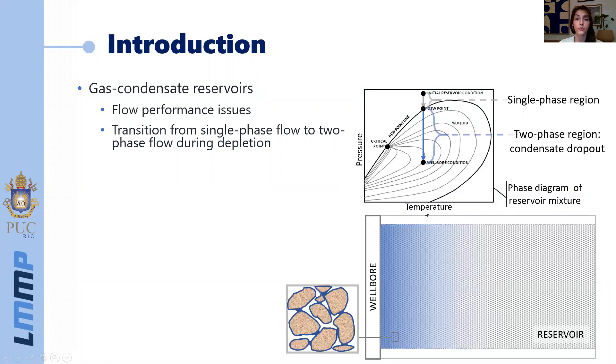However, as the depletion proceeds, we enter the two phase region where condensate dropout takes place. So now what happens in the reservoir is that apart from the well, we still may have that single phase gas flow. However, close to the well, we will have a two phase gas condensate flow.